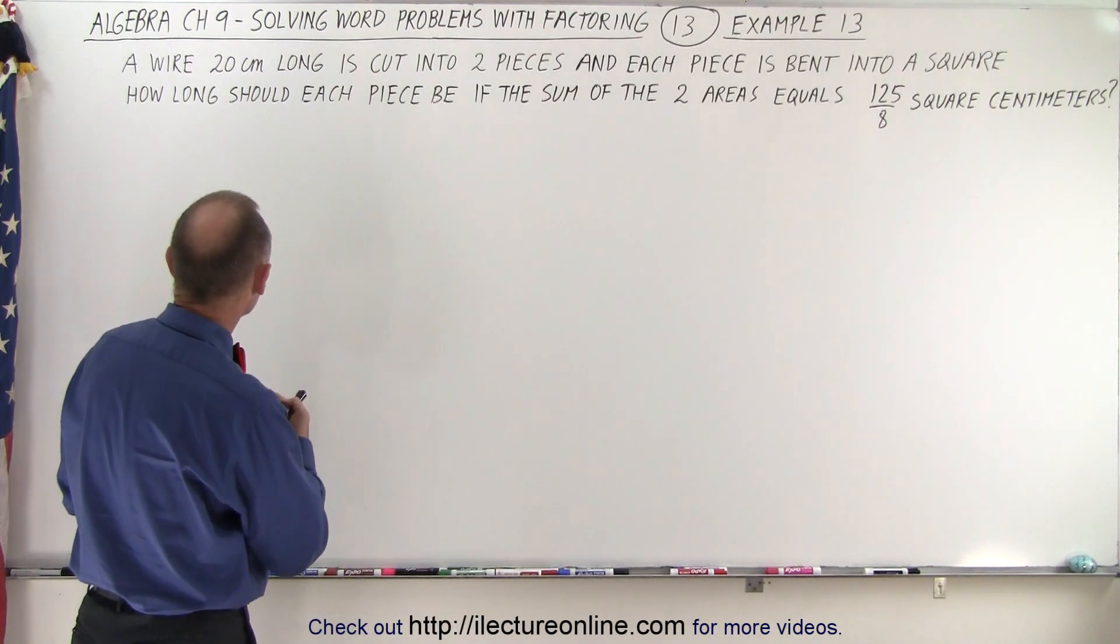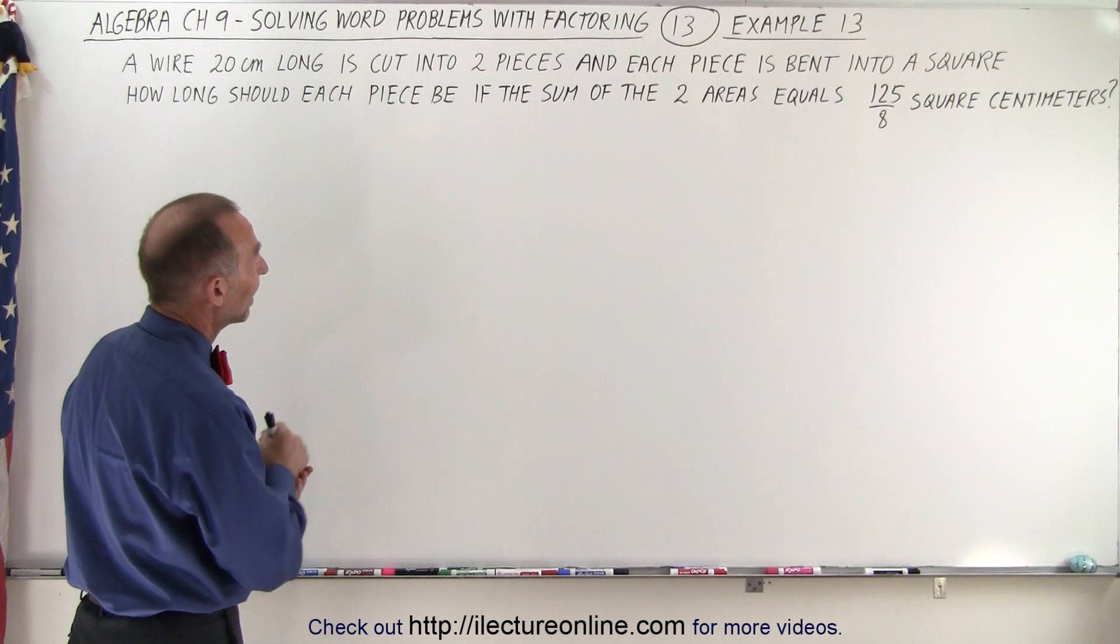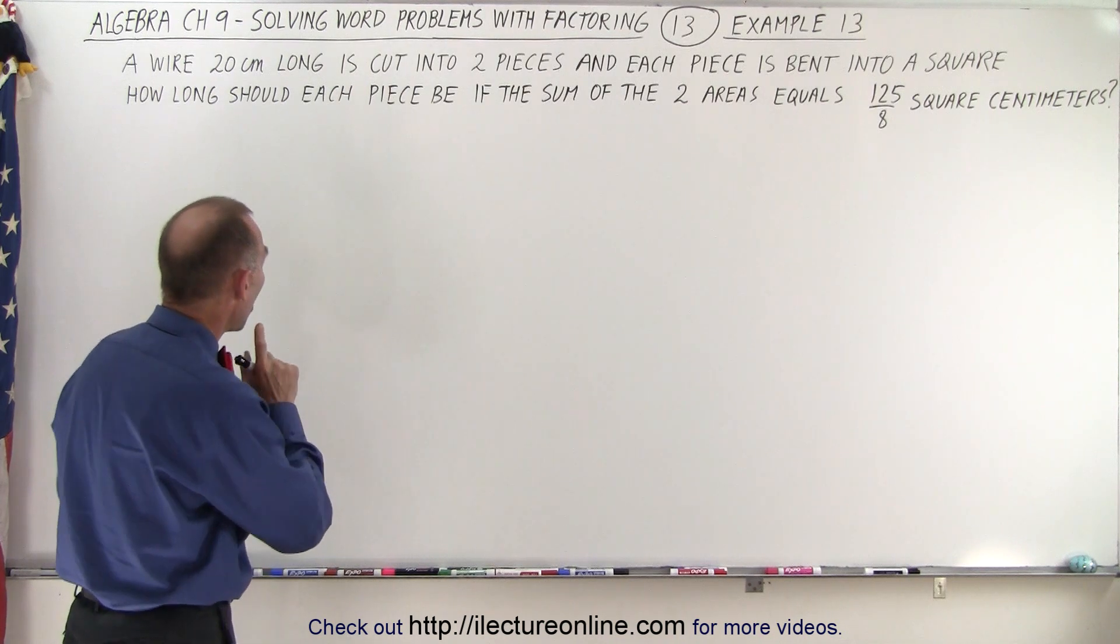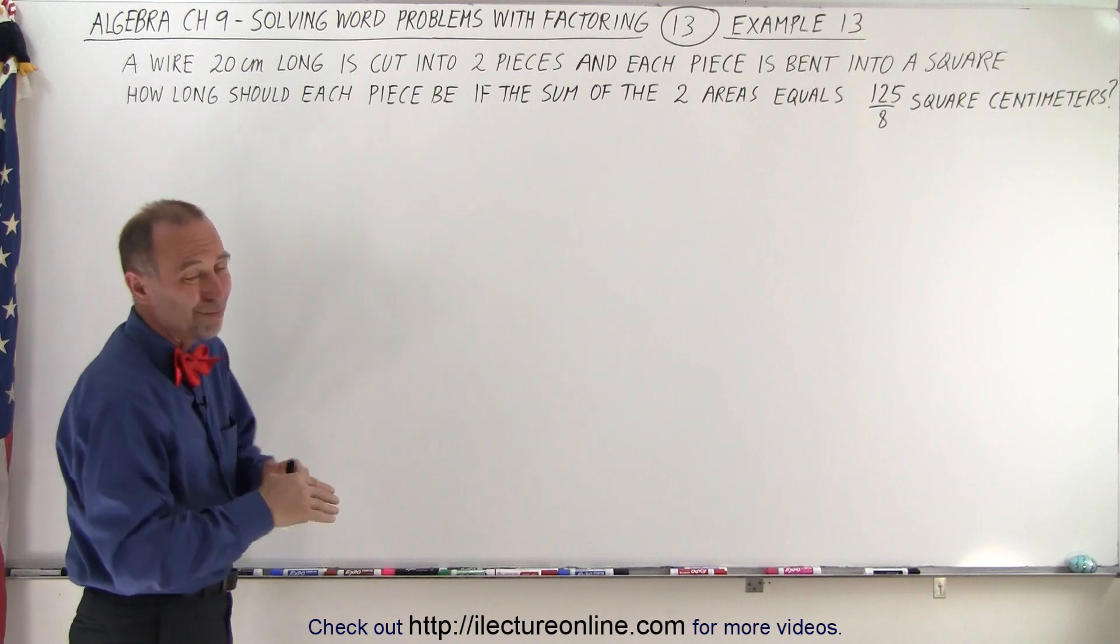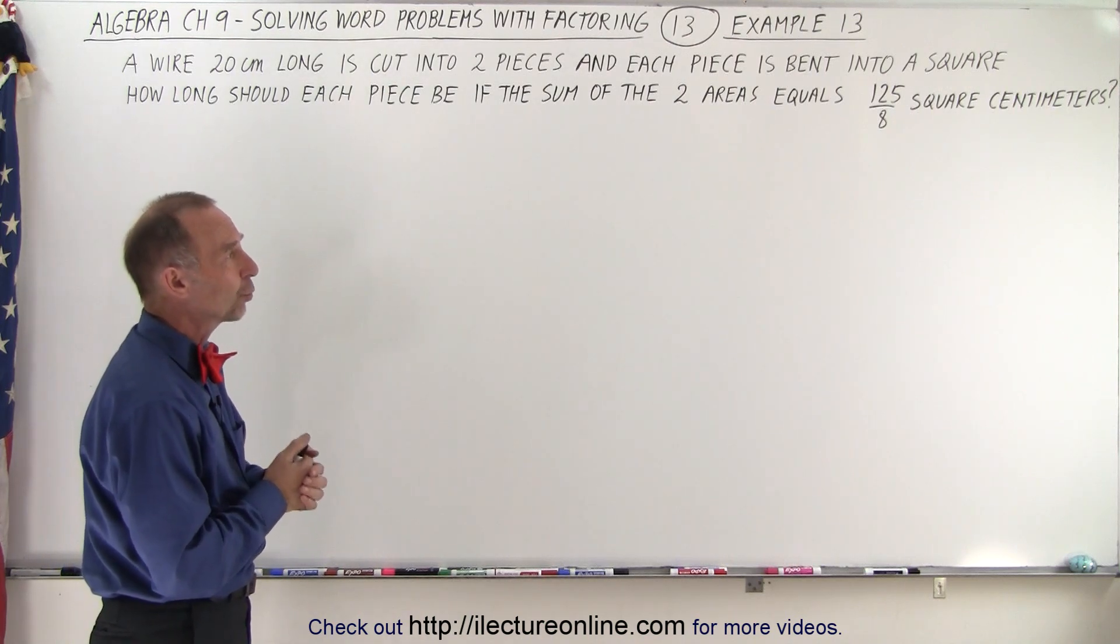It says here that a wire that is 20 centimeters long is cut into two pieces and each piece is bent into a square. How long should each piece be if the sum of the two areas made from the two wires equals 125 divided by 8 square centimeters?